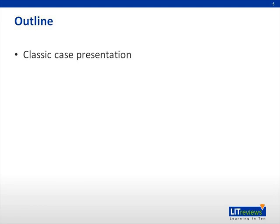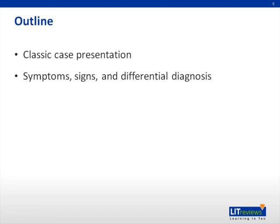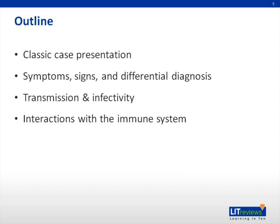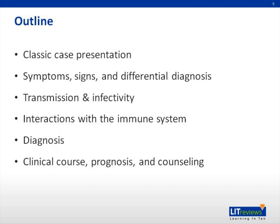By way of a quick outline, we'll start with a classic case presentation. We'll discuss symptoms, signs, and differential diagnosis. We'll talk about transmission and infectivity, and also the interactions of the virus with the immune system of the host. We'll discuss the diagnosis of mono, clinical course, what the patient should expect, and how to counsel the patient. And we'll end with a summary of take-home points.